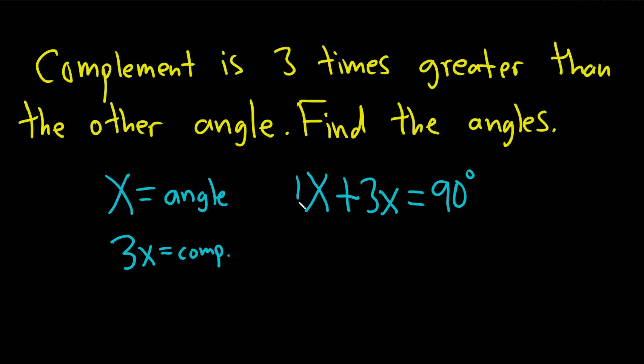This is really 1x. So we can add these by simply adding the numbers. We get 4x equals 90 degrees. Then we can divide both sides by 4. If you use your calculator, you'll get 22.5 degrees for x.